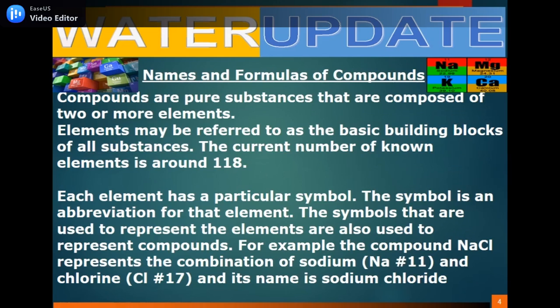Names and formulas of compounds. Compounds are pure substances that are composed of two or more elements. Elements may be referred to as the basic building blocks of all substances. The current number of known elements is around 118. Each element has a particular symbol — an abbreviation for that element. The symbols used to represent elements are also used to represent compounds. For example, sodium chloride represents the combination of sodium (Na, atomic number 11) and chlorine (atomic number 17).